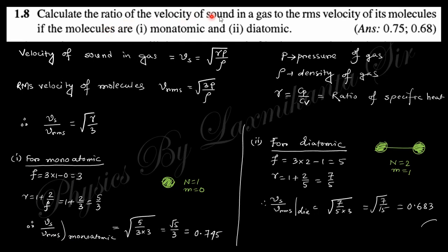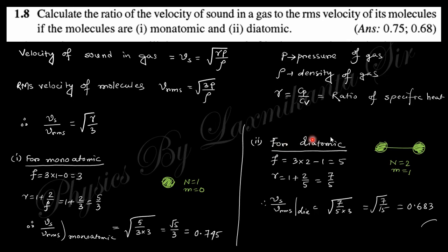Question eight: calculate the ratio of the velocity of sound in a gas to the RMS velocity of its molecules for monatomic and diatomic gases. The ratio is √(γ/3). For monatomic gas, degrees of freedom = 3, so γ = 5/3, giving ratio = √(5/9) ≈ 0.745. For diatomic gas, degrees of freedom = 5, so γ = 7/5, giving a corresponding ratio.